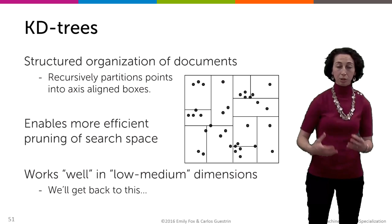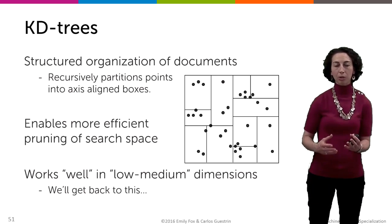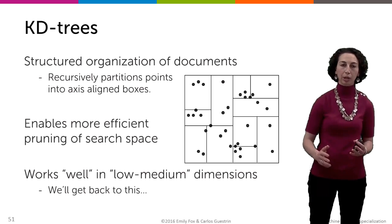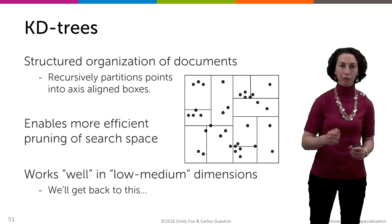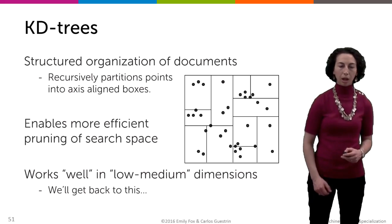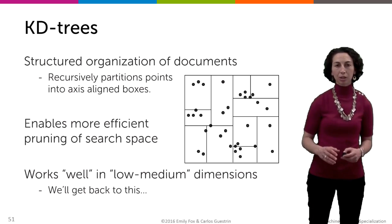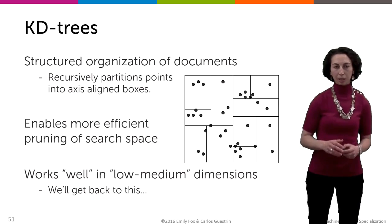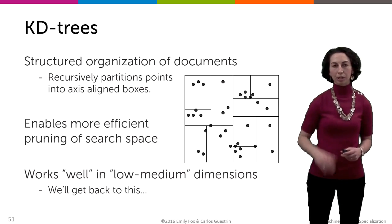And what this structure allows us to do is efficiently prune our search space so that we don't have to visit every single data point for every query necessarily. Sometimes we'll have to, but hopefully in many cases we won't have to. And these KD trees work really well in low to medium dimensions, meaning how many features we have. And we'll return to this idea a bit later.